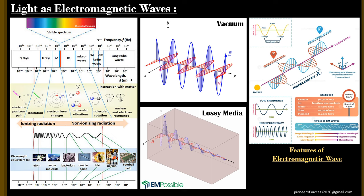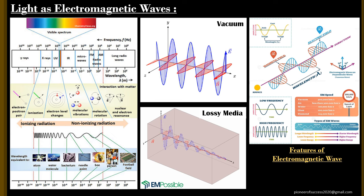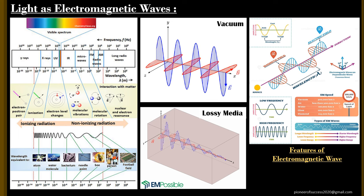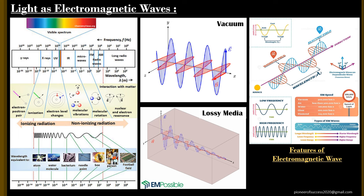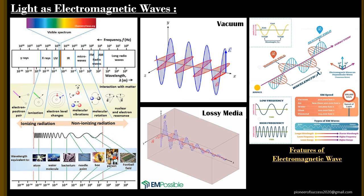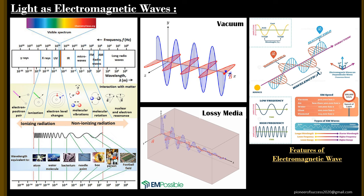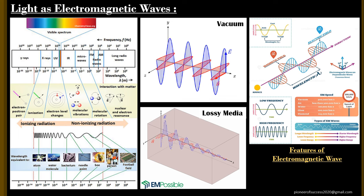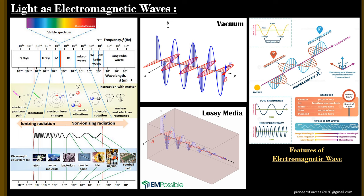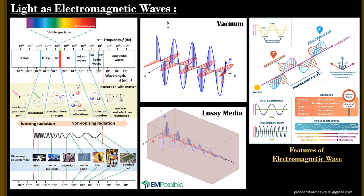Technically, an electromagnetic wave consists of two types of waveforms: the electric field and the magnetic field. The electric field arises from electric charges, which are the core building blocks of any material, and the magnetic field is generated due to the motion of these charges. When these electric and magnetic fields oscillate perpendicular to each other and to the direction of wave propagation, they generate this electromagnetic wave.